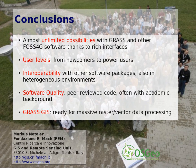To come to a conclusion, we would state that there are almost unlimited possibilities with GRASS and related FOSS4G software, thanks to rich interfaces — rich in terms of data exchange, import and export of different formats, and also in terms of user interfaces. Open source GIS software addresses different user levels from newcomers to power users. For heterogeneous environments with proprietary software, interoperability is very important. Many projects rely on interoperability libraries that are also used in proprietary software, the same libraries, ensuring that data exchange is easy and straightforward.